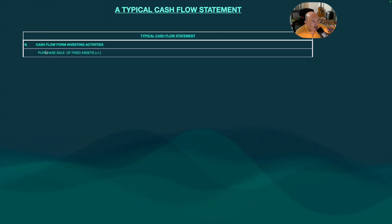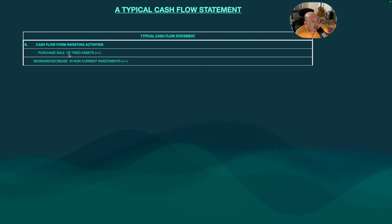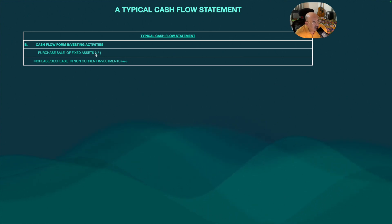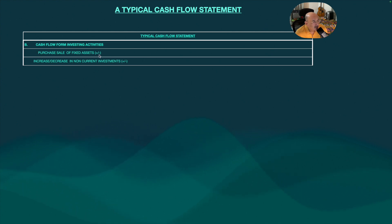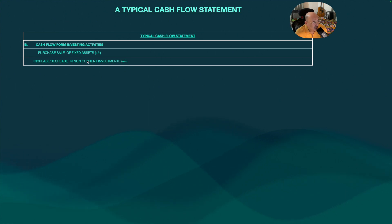Revisiting cash flow from investing activities: if you purchase any asset, cash reduces; if you sell a fixed asset, cash increases. For non-current investments: an increase means you have used cash, so it is a cash outflow; a decrease means money has been received back.